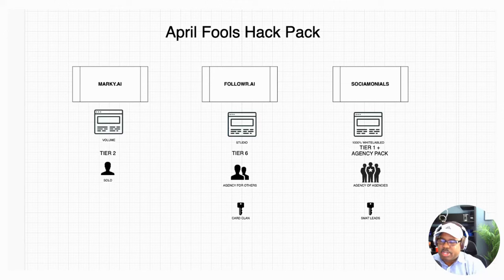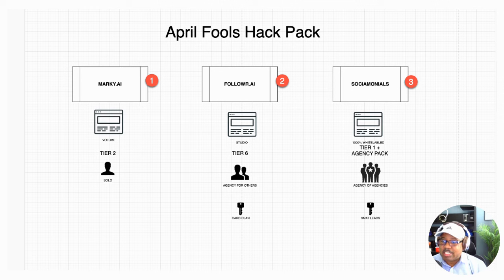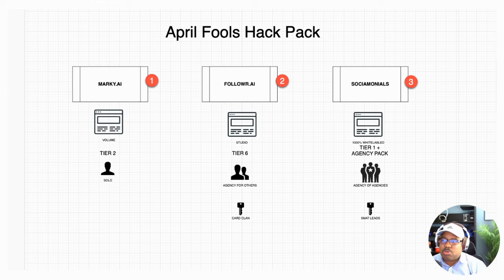Alright, let's do this breakdown. What you have in front of you is three tools in this April Fools pack: number one is Marquee.ai, number two is Follower.ai, and then you have Social Monials. You're probably saying, what do all three have in common? They're all schedulers for social media posts. On the surface they may look close, but they are definitely different — not as similar as one may think.